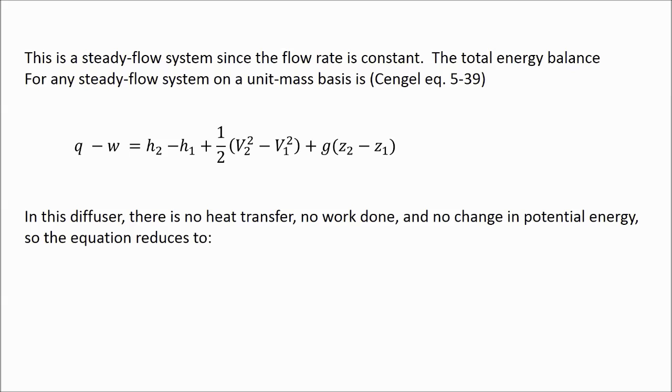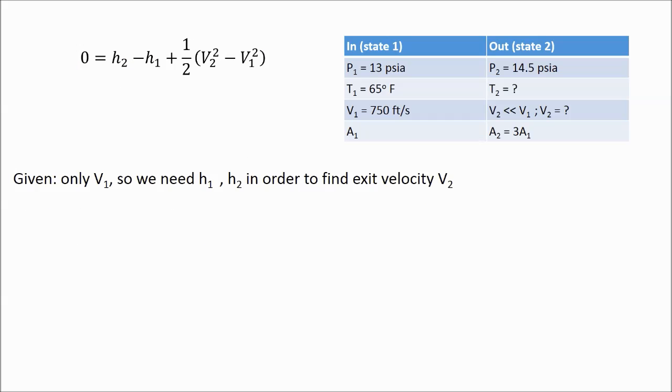Since in this case we have no heat transfer, no boundary work done, and no change in the gravitational potential energy, we can reduce the equation to a simpler form, given by just the difference between the enthalpies and the kinetic energies at the entrance and exit.